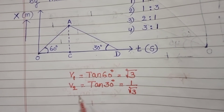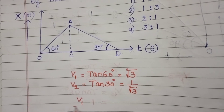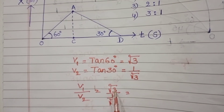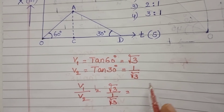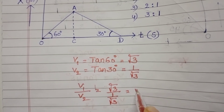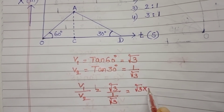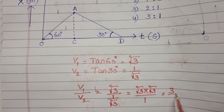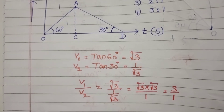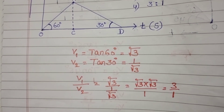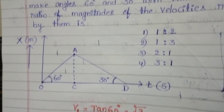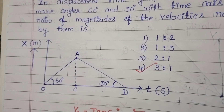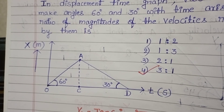The ratio of magnitudes of the velocities V1 by V2 equals root 3 divided by 1 by root 3, which equals root 3 into root 3, that is 3 by 1. So the ratio of magnitudes of velocities is 3 is to 1. Checking the given options, the fourth option, 3 is to 1, is the correct answer.